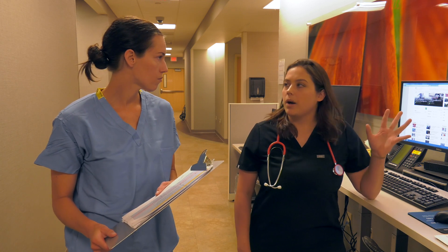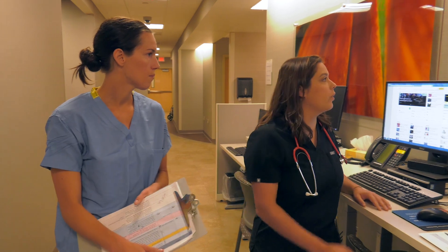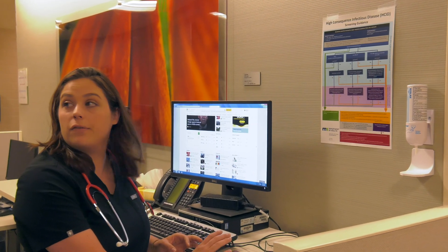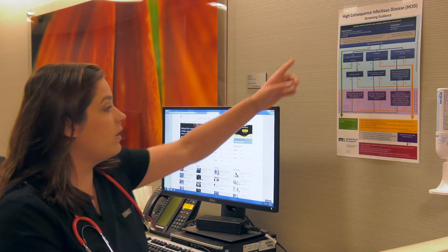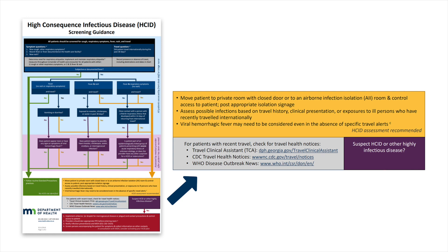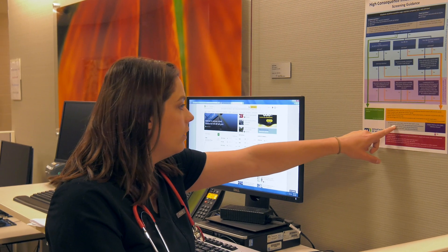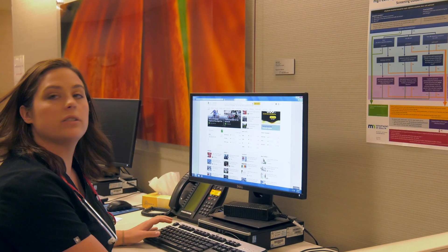Okay, thanks Heather. Looks like we should probably go to our screening tool just to get an idea of what we should do. So looking at this, it looks like based on his cough, fever, and recent travel, he falls into the yellow box. This tells us that we should move the patient to a private or isolation room. And you've already done that, so great job. Next, it says we should assess possible infections based on travel history, clinical presentation, and there are some resources here. So let's use that. I'll go to the first one — the clinical travel clinical assistant from the state of Georgia.